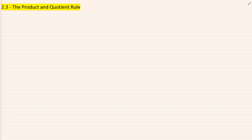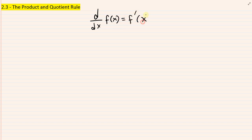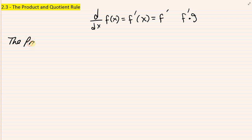In section 2.3 we're going to talk about the product and quotient rule of derivatives. Let's begin with the product rule. The notation I use — we are familiar with this notation: we have d/dx of f(x), which means f prime of x, and I can use f prime notation.